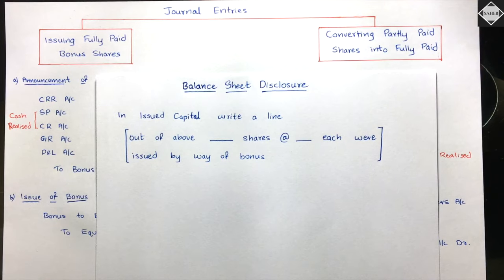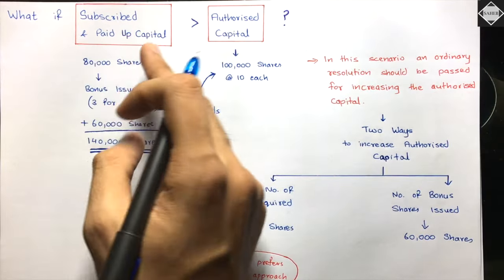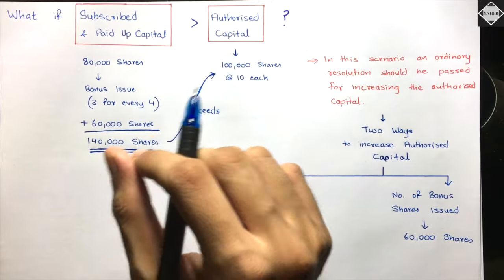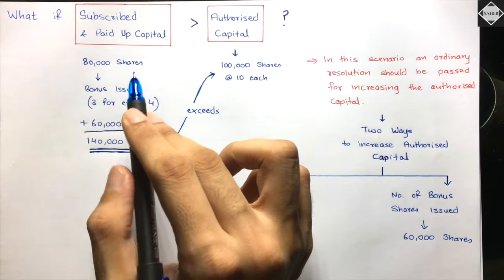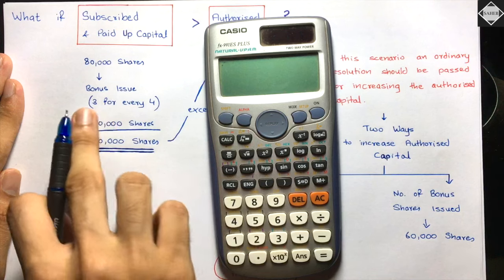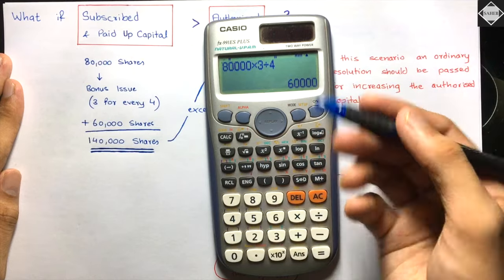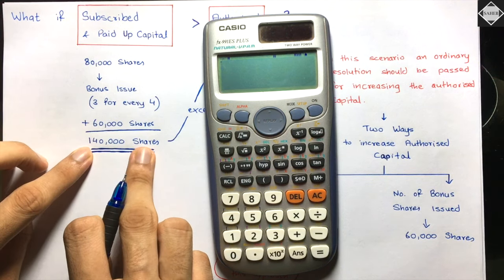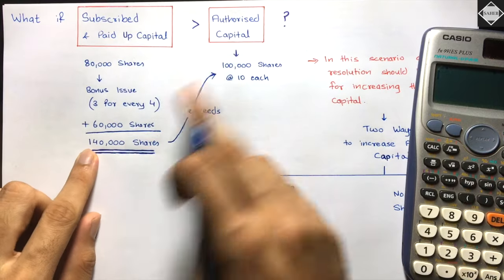One more adjustment to know: authorized capital adjustment. After a bonus issue, the subscribed and paid-up capital may exceed the authorized capital. For example: 80,000 existing shares; bonus scheme 3 for every 4; bonus shares = 80,000 × 3/4 = 60,000. Total shares after bonus = 80,000 + 60,000 = 1,40,000. But if authorized capital is only 1 lakh, you have a problem.